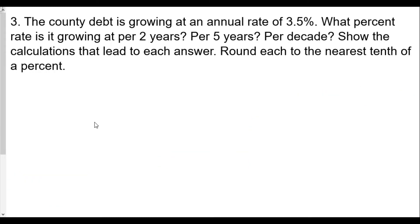The county debt is growing at an annual rate of 3.5%. What percent rate is it growing at per 2 years, per 5 years, per decade? Show the calculations that led to each answer and round each to the nearest tenth of a percent. So we know in this case that the annual rate is 3.5%. So here, r equals 0.035, changing the percent to a decimal. And each of these situations is going to have a different k value. For the first one, when n equals 2, we will have 1 plus k is equal to 1 plus 0.035 to the second power.